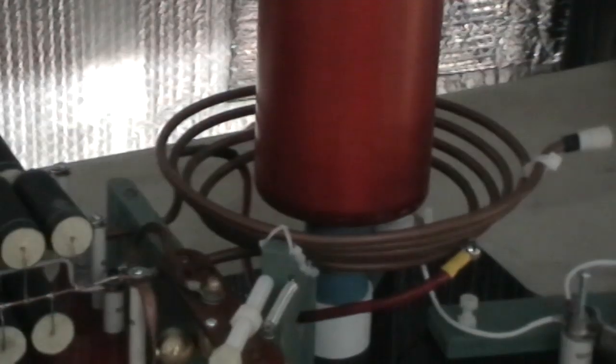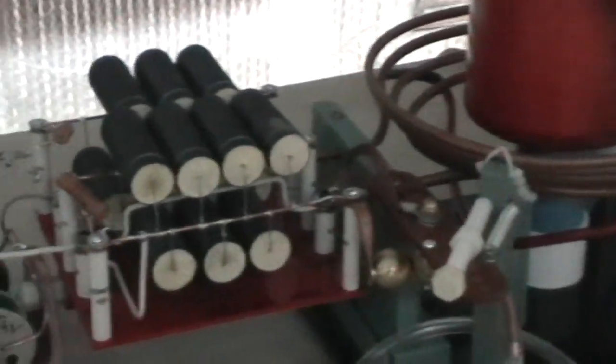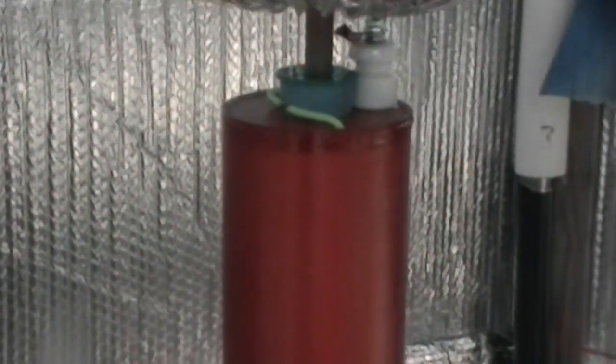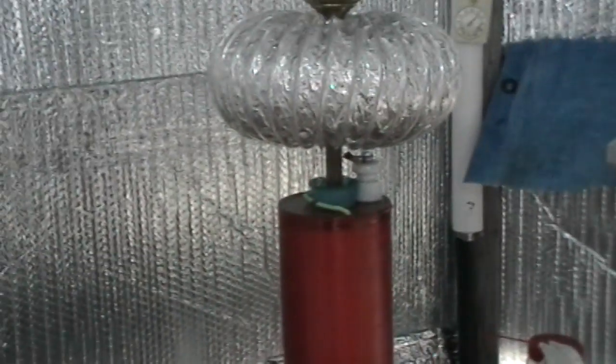So there's the basic coil, there's the base primary tapped at about two and a third turns, there's the secondary which is 750 turns of number 27 magnet wire on a four and a quarter inch PVC former.